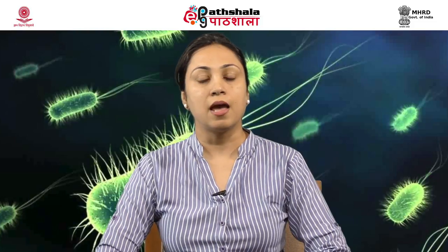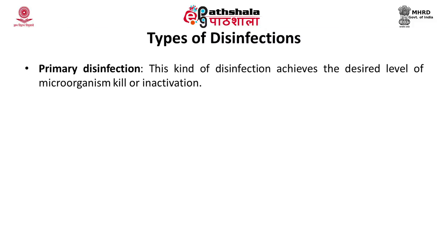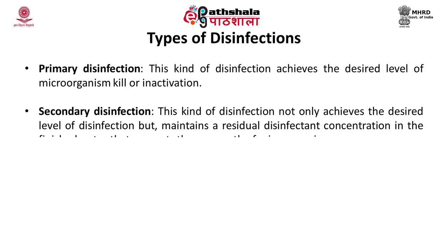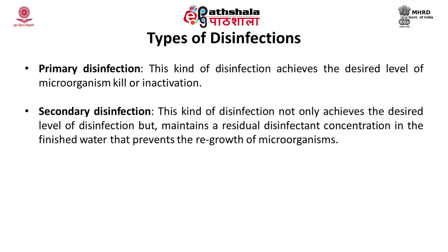There are two kinds of disinfectants: primary disinfectants and secondary disinfectants. Primary disinfection achieves the desired level of microorganism kill or inactivation, while secondary disinfection not only achieves the desired level of disinfection but also maintains a residual disinfectant concentration in the finished water, which prevents the regrowth of microorganisms.